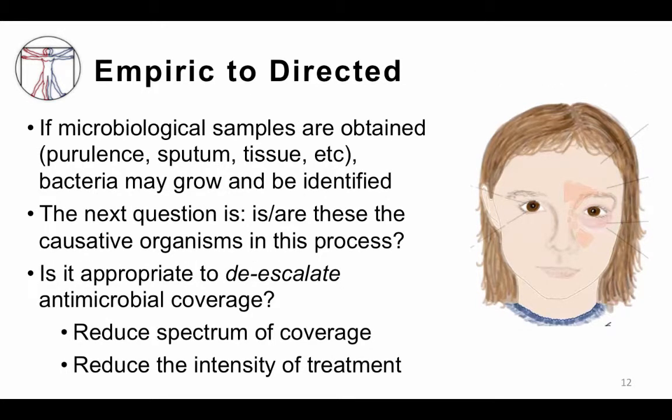At some point, we hope to transition from empiric — our best guess therapy — to directed therapy, or evidence-based therapy. If microbiological samples are obtained, such as purulence or pus, sputum, or tissue, bacteria may grow and be identified in the clinical microbiology lab. The next question is whether these are the causative organisms in this process, since sometimes bacteria grow that may be colonizers and not true pathogens — and this has to be determined.